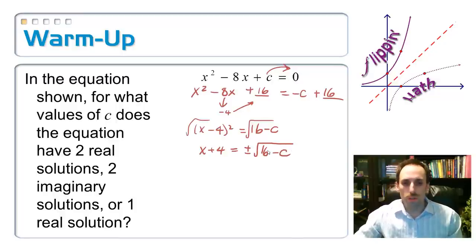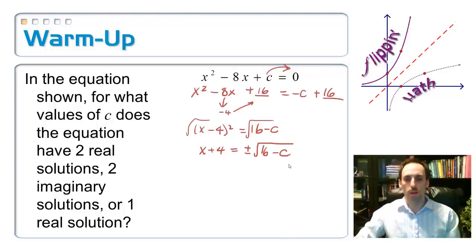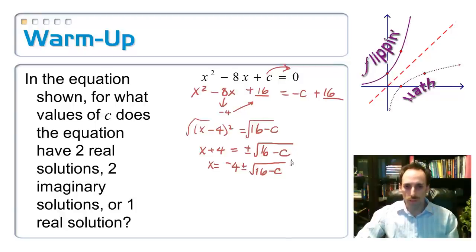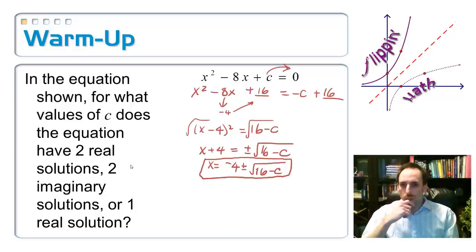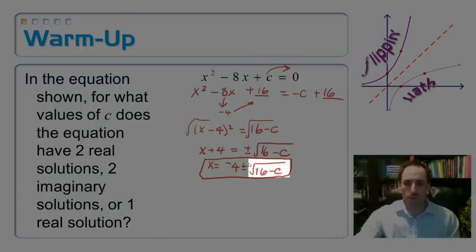Here's a question: can you simplify the square root of 16 minus C as the square root of 16 minus the square root of C? Think about it for a second. No, you can't. And then finally, x equals negative 4 plus or minus the square root of 16 minus C. Now, where does that leave us? How are we going to use that to figure out how many answers we're going to have and what kind they are — two real ones, two imaginary ones? It all depends on this square root, the square root of 16 minus C.